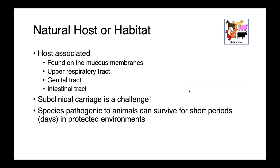Mycoplasmas are host associated. They're found on the mucus membranes, the upper respiratory tract, the genital tract, and the intestinal tract. For our hemotrophic species, we find them in the blood. Subclinical carriage is a real challenge — many animals not displaying any signs of disease potentially have the organisms. While they are primarily host associated, they can survive for short periods of time in protected environments.